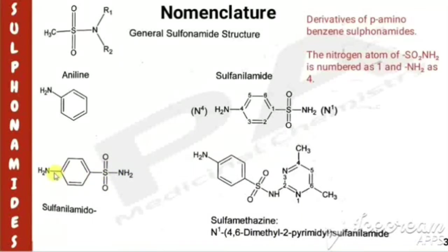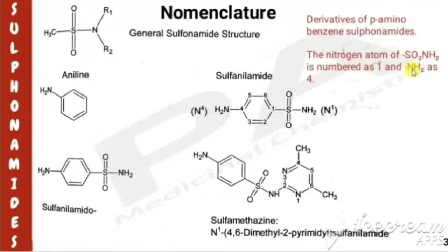The sulfonamide structure has two nitrogens: one nitrogen is called N1 (the nitrogen of SO2NH2) and the other is called N4 (the nitrogen of NH2). Based on this numbering, sulfonamides are named accordingly. That's all about the nomenclature of sulfonamides.